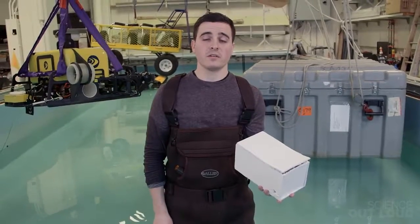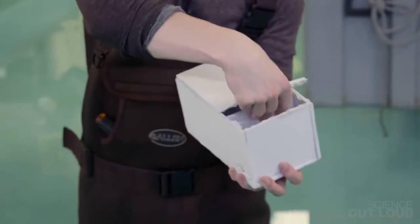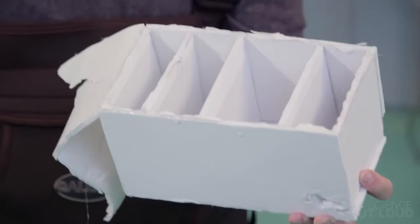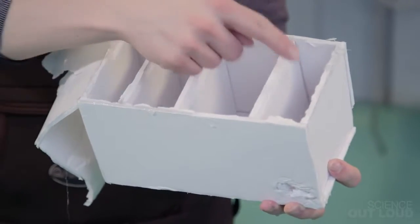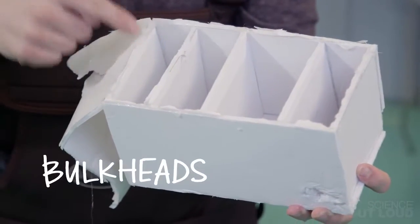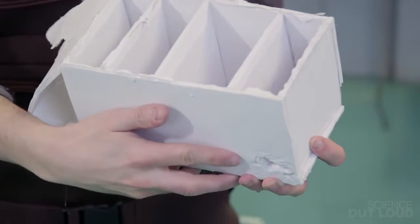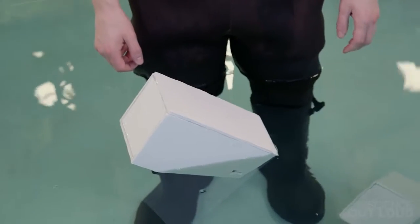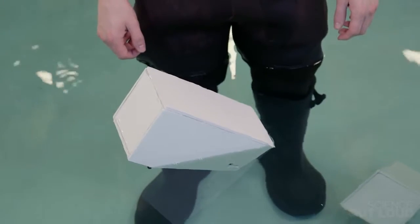The design of this box basically prevents too much water from getting into it. This box's hull was divided up into watertight compartments with these walls called bulkheads. So when I made a hole right here, only this compartment filled up with water. The rest stayed dry and were able to keep the box afloat.